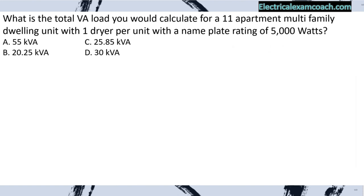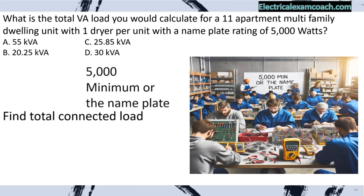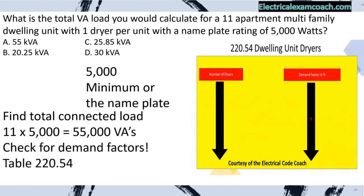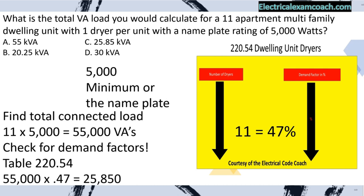Practice problem: What is the total VA load for an 11-apartment multifamily dwelling unit with one dryer per unit and a nameplate rating of 5,000 watts? Find the total connected load: 11 units multiplied by 5,000 equals 55,000 VAs. Check for demand factors per Table 220.54: the demand factor for 11 dryers is 47%. We take 55,000 multiplied by 0.47, giving a new reduced load of 25,850 VAs. We select C.